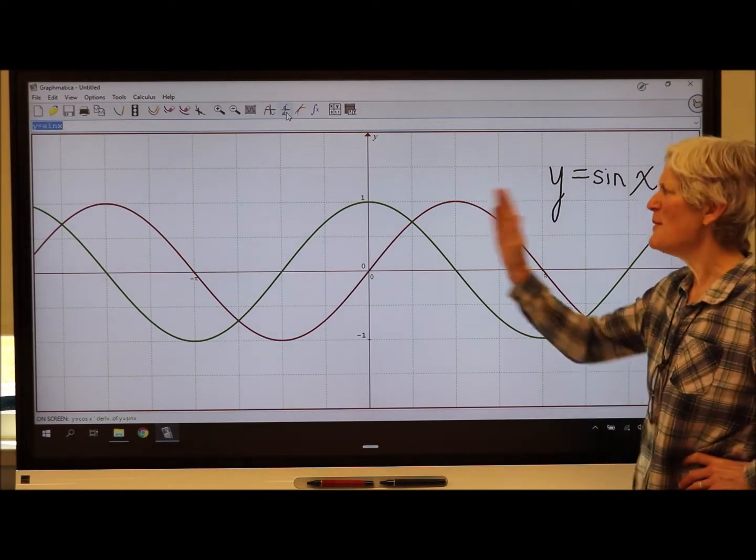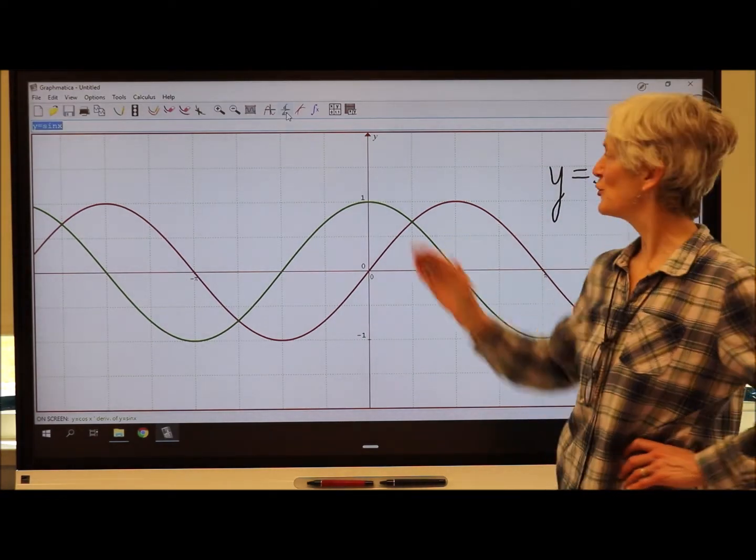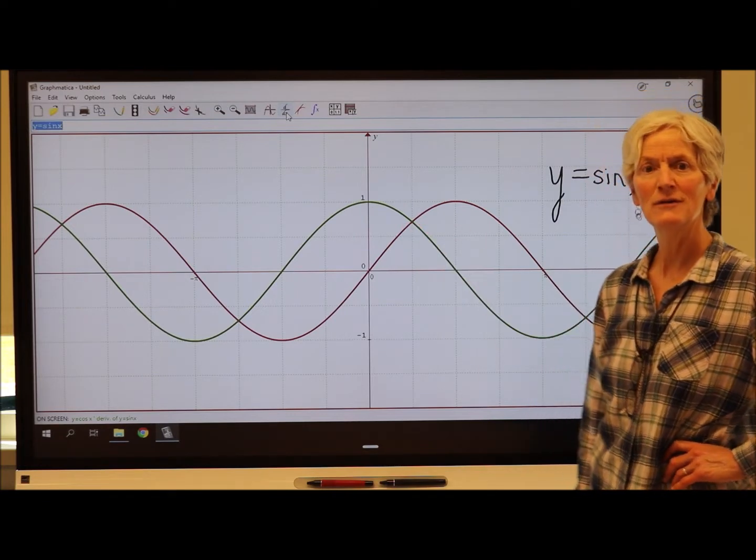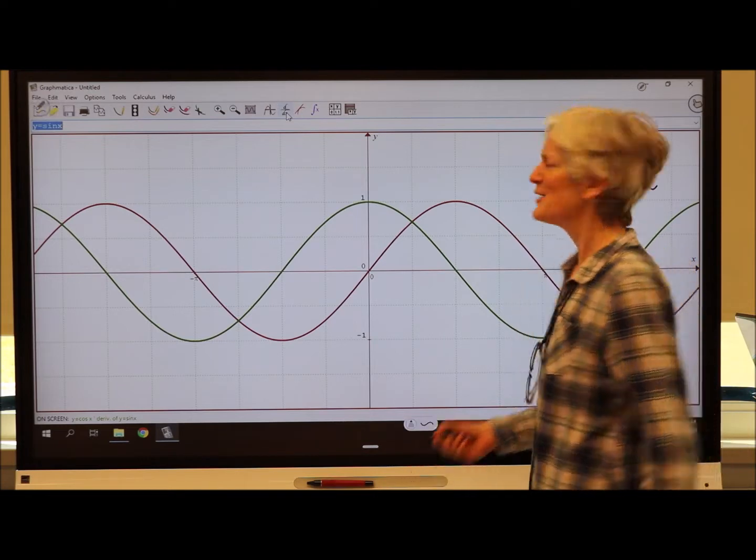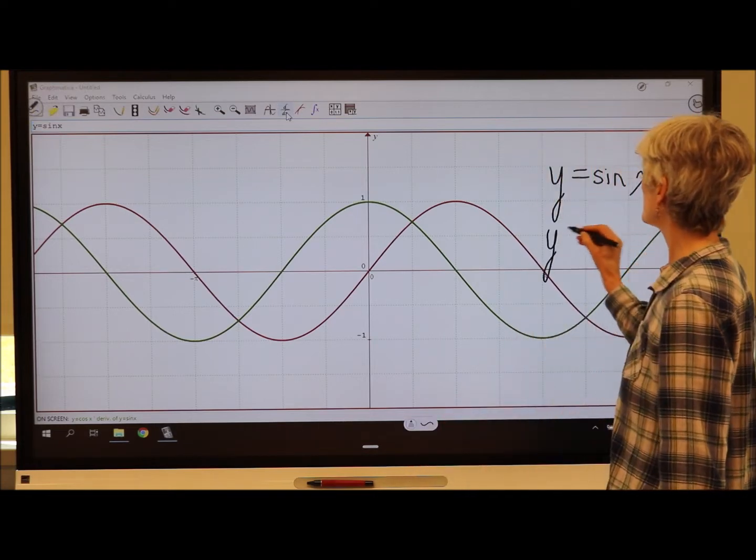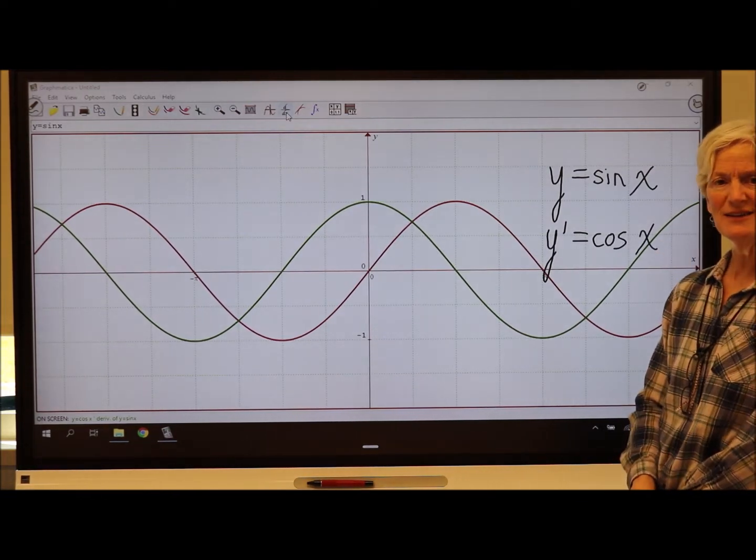The green is the derivative of sine of x. Oh my gosh, take a moment. See if you can figure out what would be the equation of that green curve. Sure, that's a cosine curve. Holy smokes. It looks like the derivative of sine of x is cosine of x.